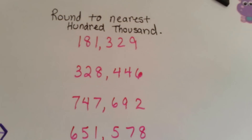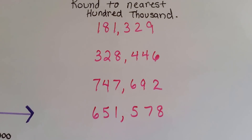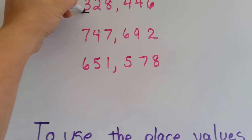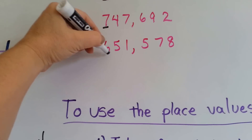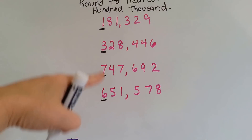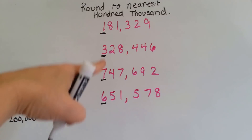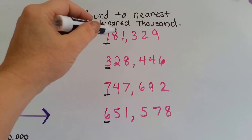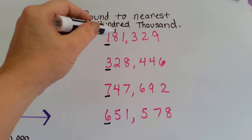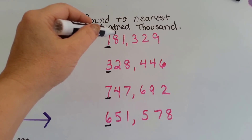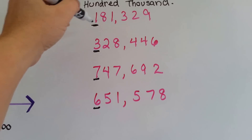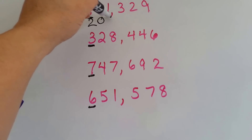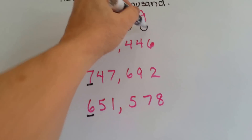Round to the nearest 100,000. First thing we're going to do is identify the place value we're rounding. So these are all going to be rounded to the 100,000 — every single one of these is going to be rounded to that place value. What is the number to the right of this one? It's an 8. Is it bigger than 5? Yes — 8 is bigger than 5. So that's going to tell the 1 to become a 2. Once 8 has done his job, he becomes a 0 and everybody behind him becomes a 0.